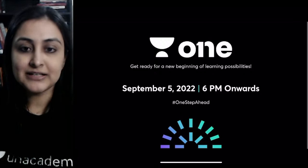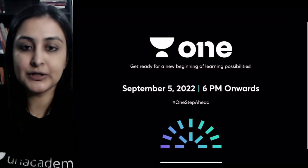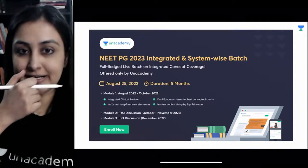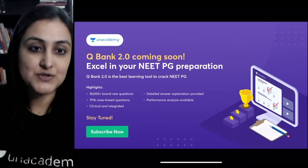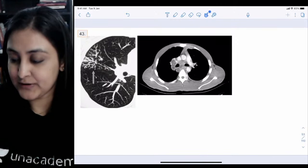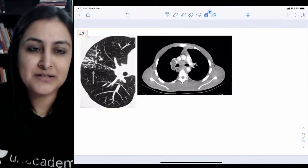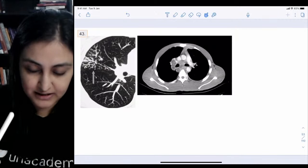On September 5th, Teachers' Day, an Academy is celebrating with updates on new offers and app features — log in at 6 o'clock. The integrated system-wise batch started August 25th, and Cuban 2.0 is launching very soon. We've done 42 images and are now on the 43rd, covering important topics in detail.